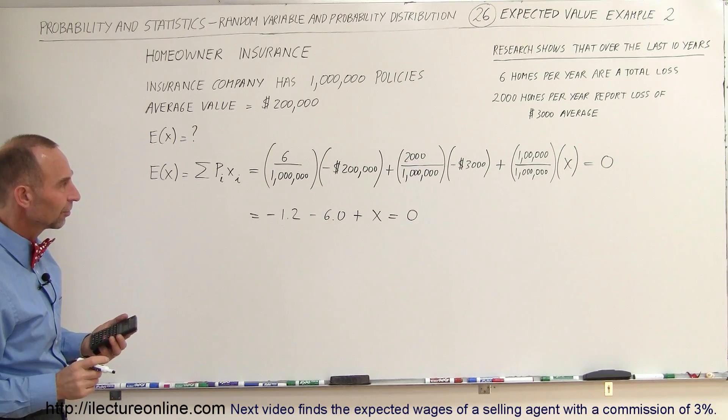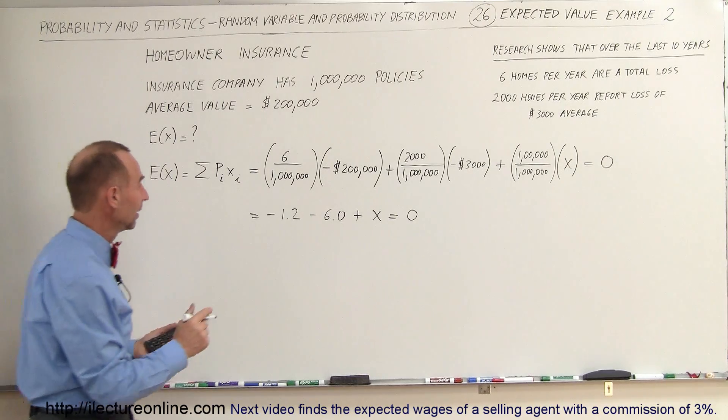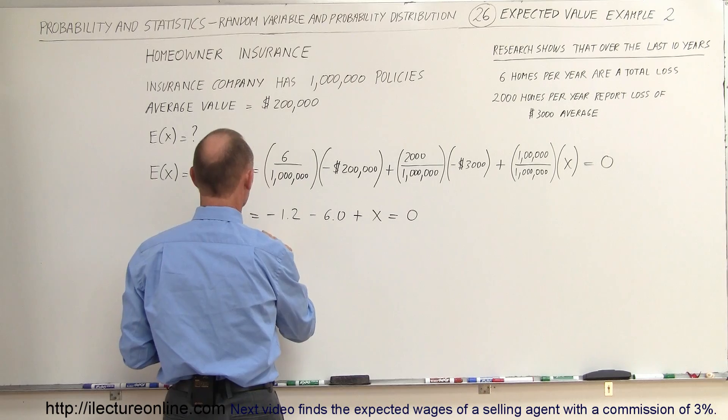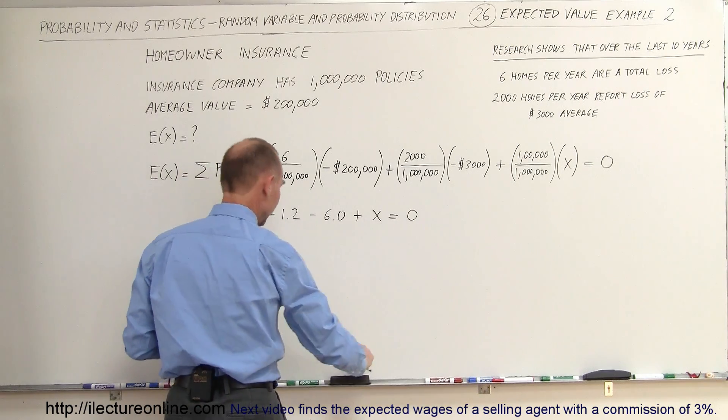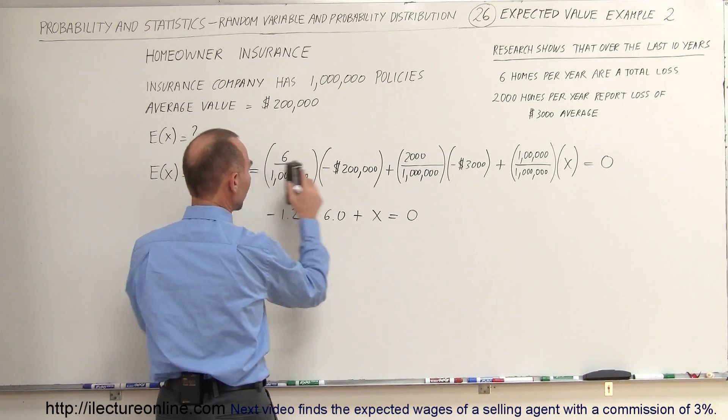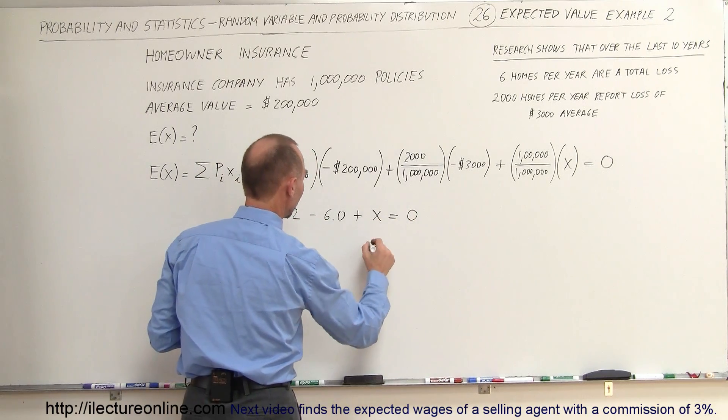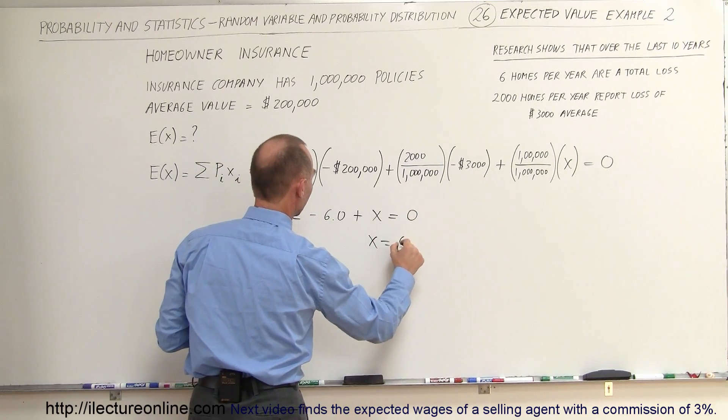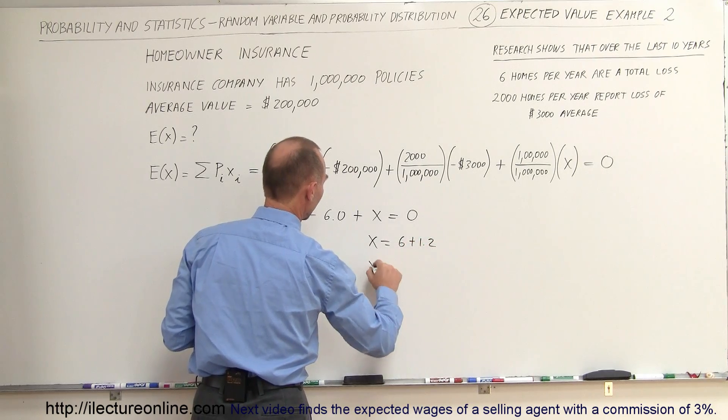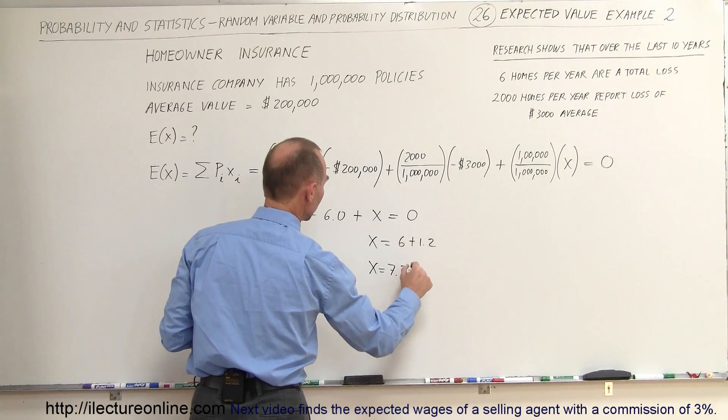So when we add all this up together, we bring this to the other side, so we have X is equal to 6 plus 1.2, so X is equal to $7.2.